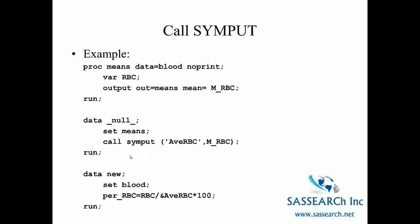Then we are going to create a new data set called data_new. We bring in our original data set blood and calculate the percent red blood cell count, which is equal to RBC from our data set blood divided by our global macro variable &avRBC — and because it is a macro variable we start with an ampersand — then multiplied by 100. So we have calculated the ratio of red blood cells for an individual to the average red blood cells of all observations in our data set times 100, without ever having looked at the output to determine the actual average.